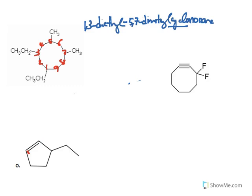There are two numbering choices. In one direction, the double bond is between one and two, and the substitution takes carbon number three. In the other direction, counting one through five, the substitution would be on carbon number five, which is of course not the best choice. So the first direction gives the lower number to the substitution.